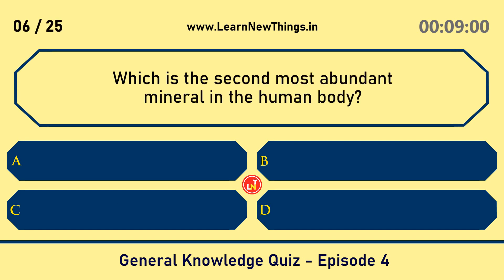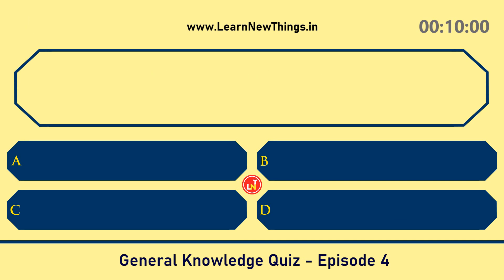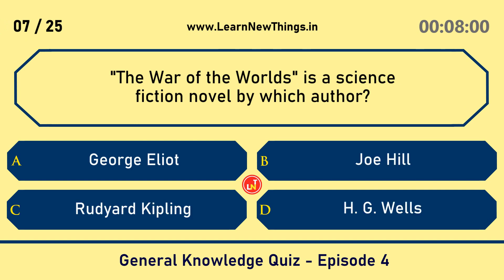Which is the second most abundant mineral in the human body? The War of the Worlds is a science fiction novel by which author? H.G. Wells.